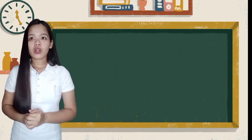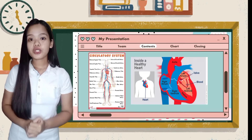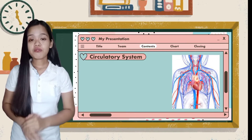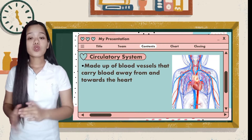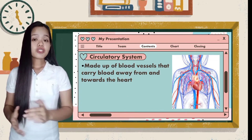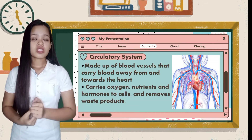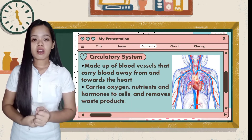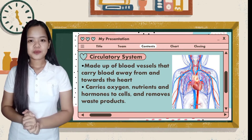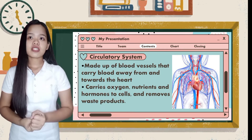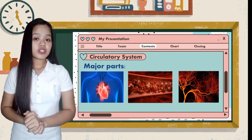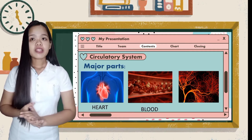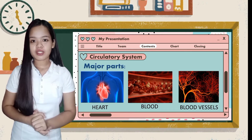The circulatory system is made up of blood vessels that carry blood away from and towards the heart. It carries oxygen, nutrients, and hormones to cells, and removes waste products like carbon dioxide. The major parts of the circulatory system are the heart, blood, and blood vessels.